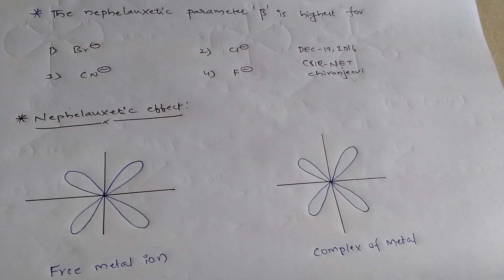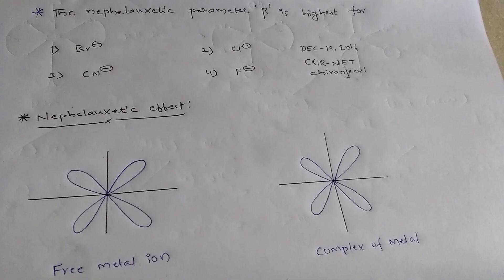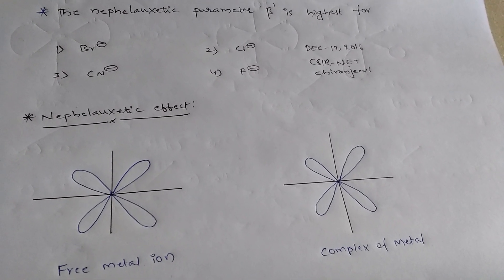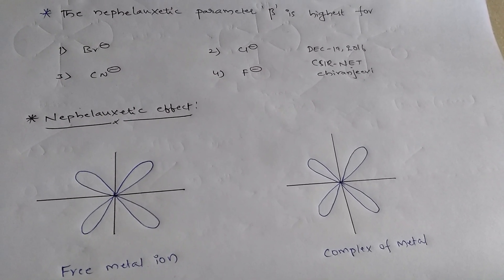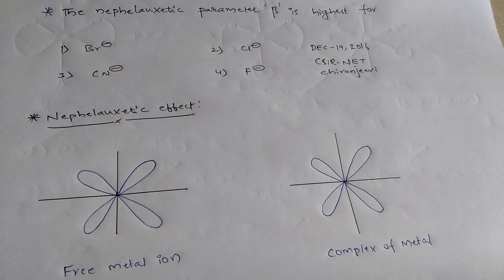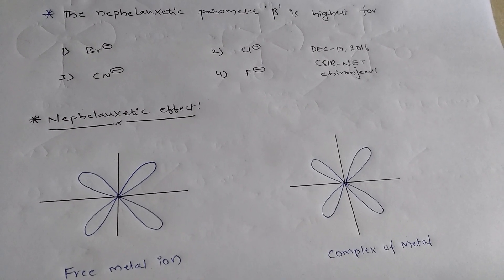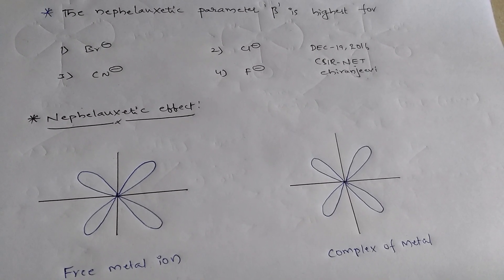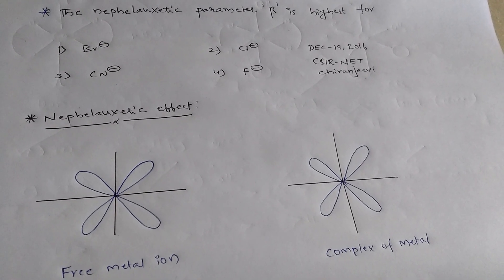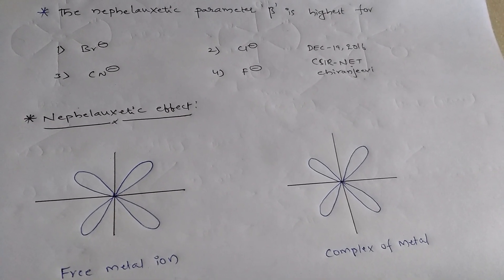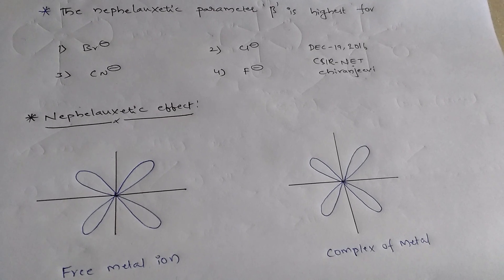This is Chiranjeevi. This question appeared in December 2016 CSIR Net. The question is: the nephelaxitic parameter beta is highest for?